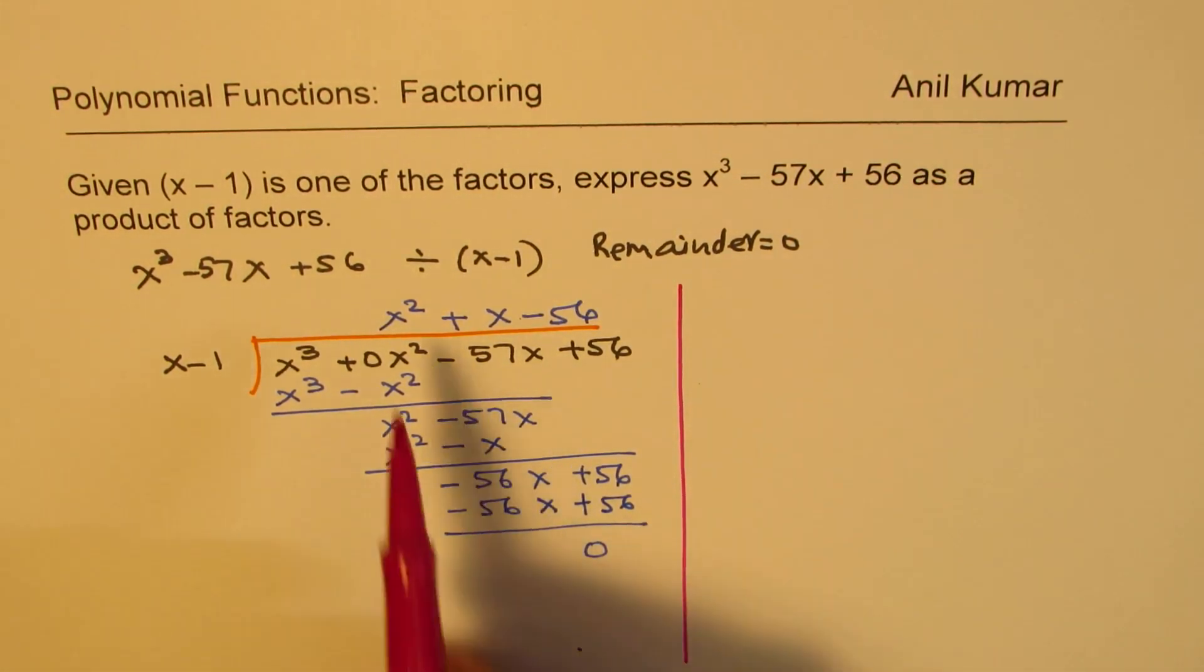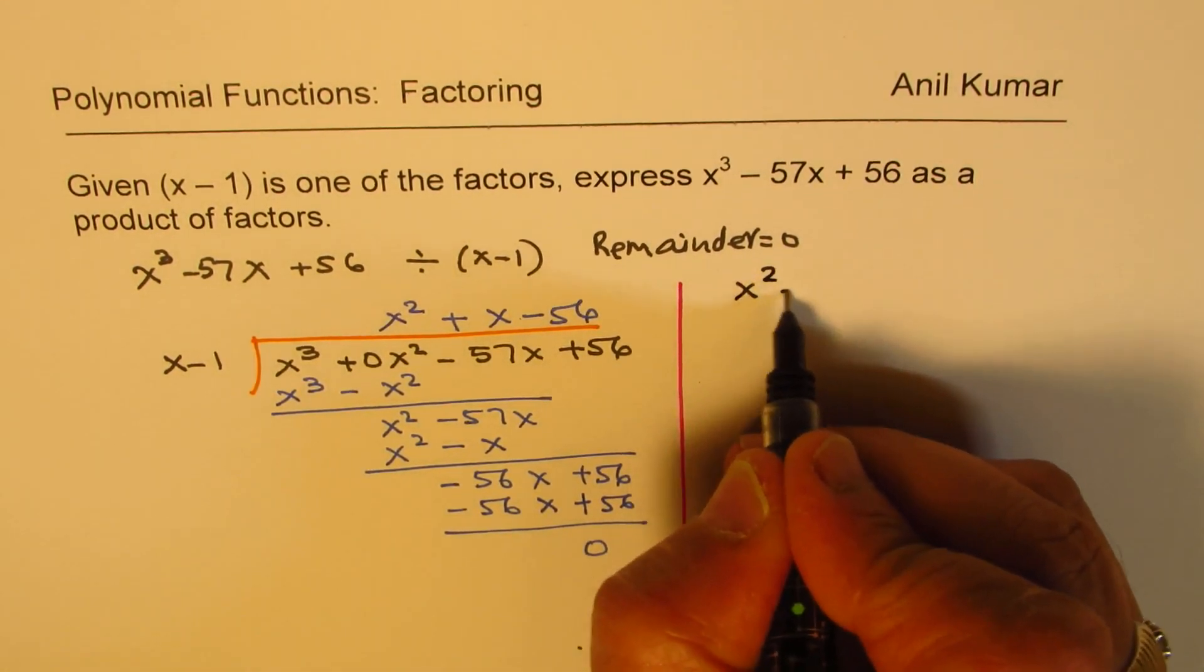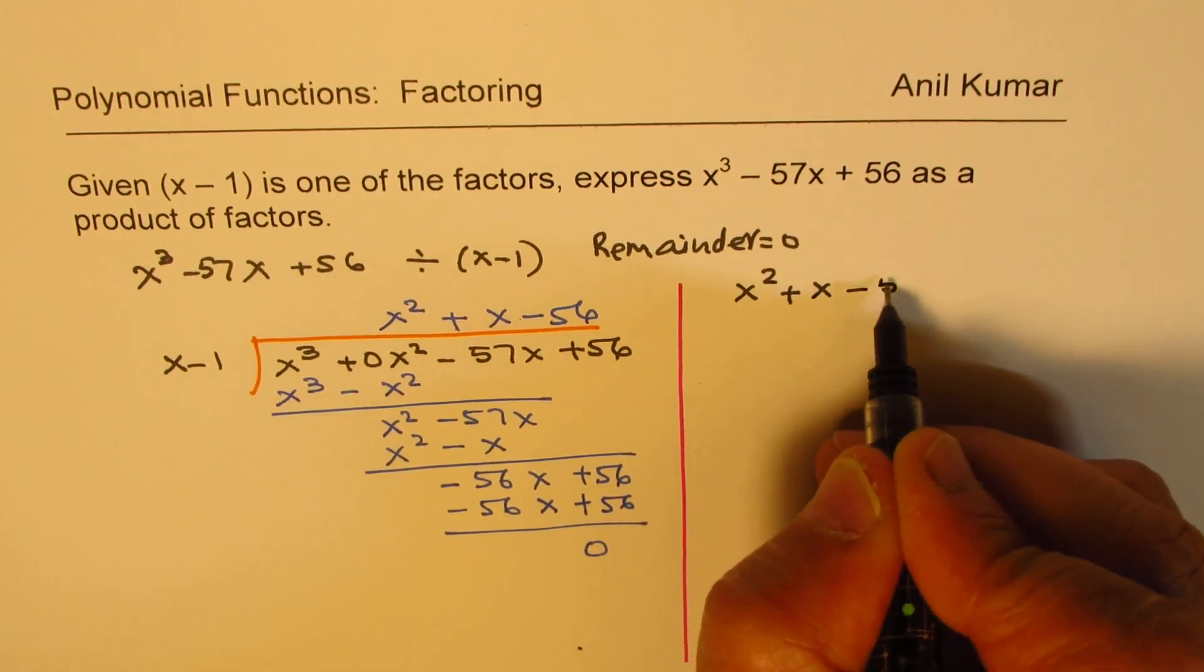So that means the other factor is what? The other factor is x squared plus x minus 56.